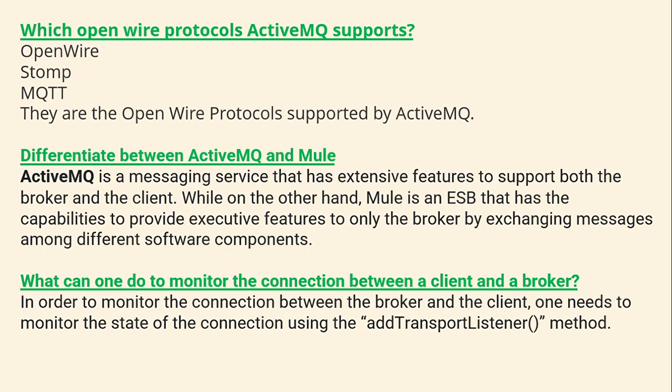What can one do to monitor the connection between the client and the broker? In order to monitor the connection, one needs to monitor the state of the connection using the Add Transport Listener method.